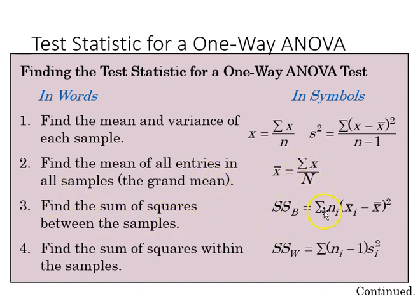So we find the sum of squares between the samples as the sum of n subscript i times the x subscript i minus x bar bar, the grand mean squared.